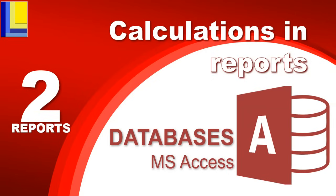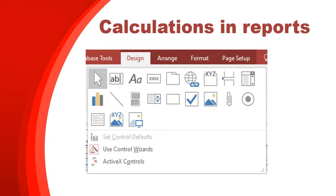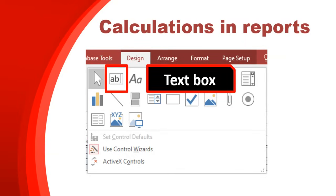This is part two of our series on reports in Access databases, and we're going to be looking at how we can do some calculations in our reports — some nice little summaries to tell us about the information that's in the report. To put a summary or calculation into a report, we need to know what control we can put those formulas in, and the control that you need to use is the text box.